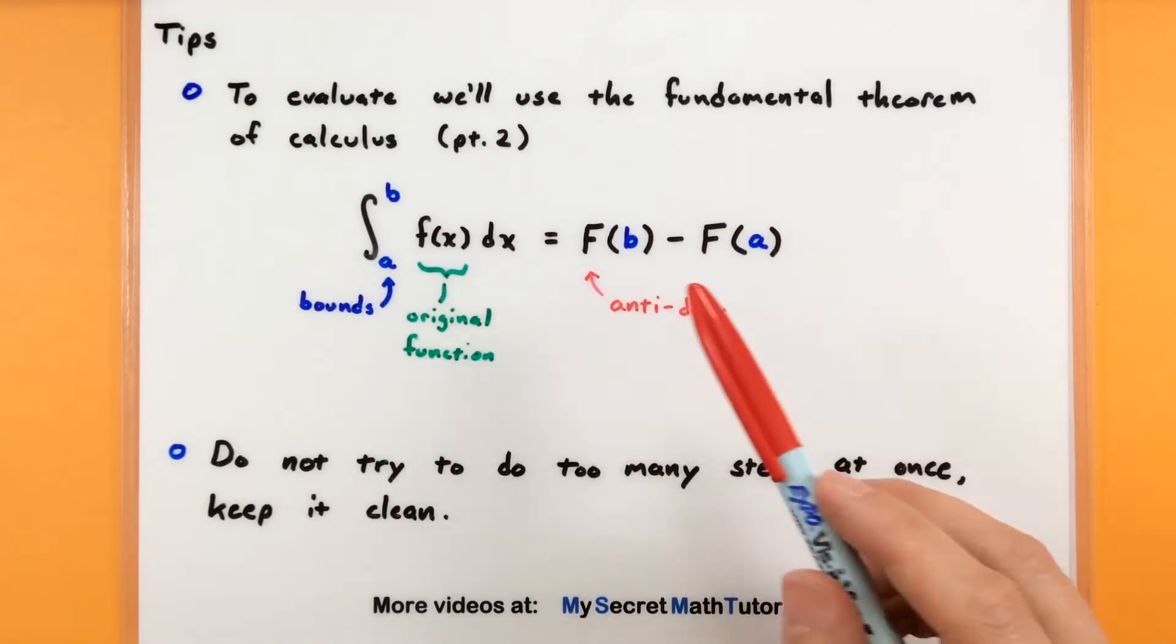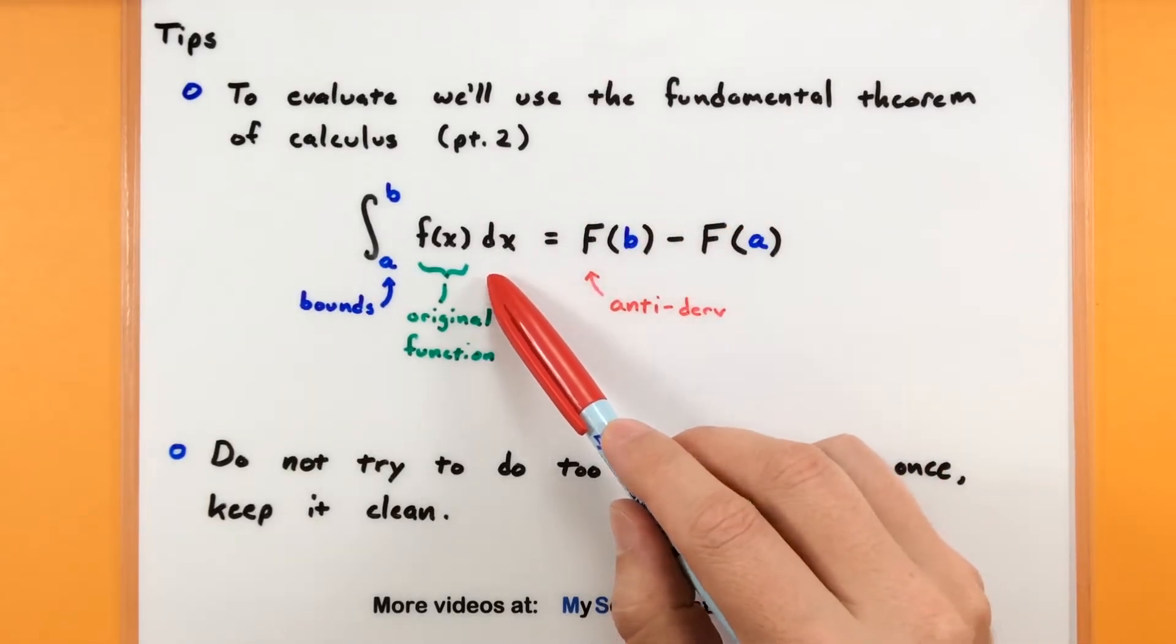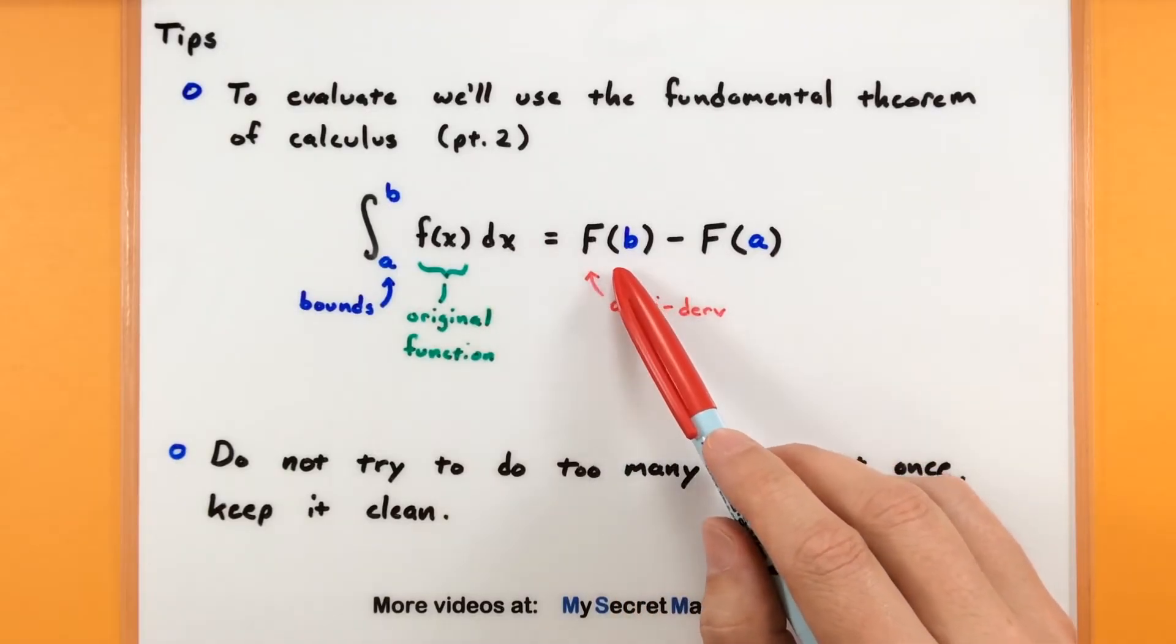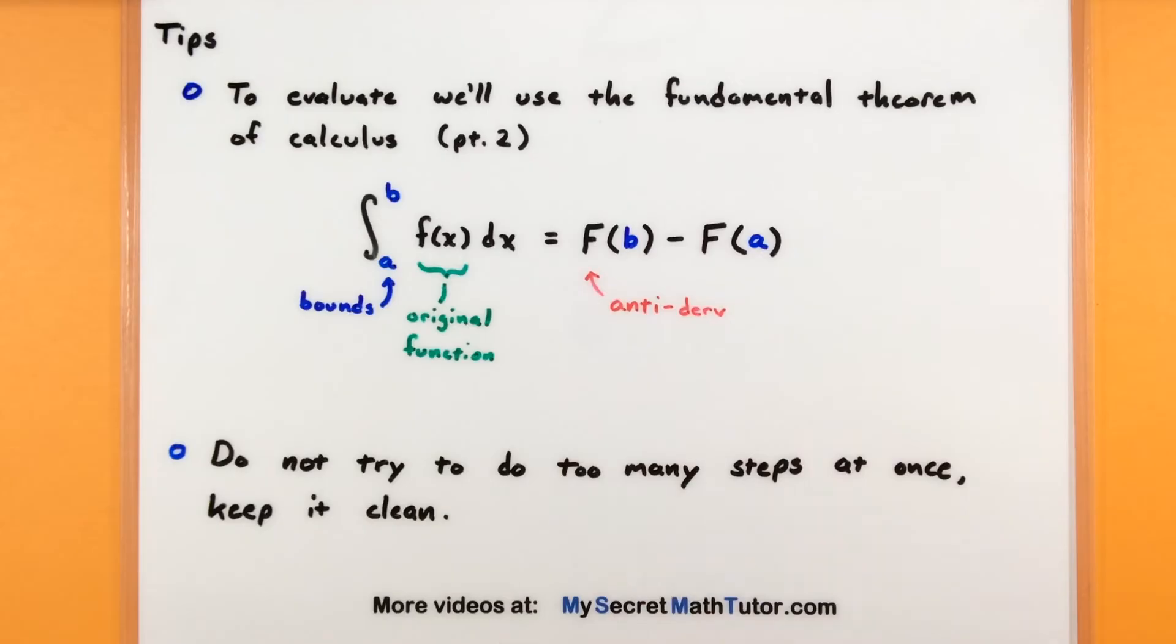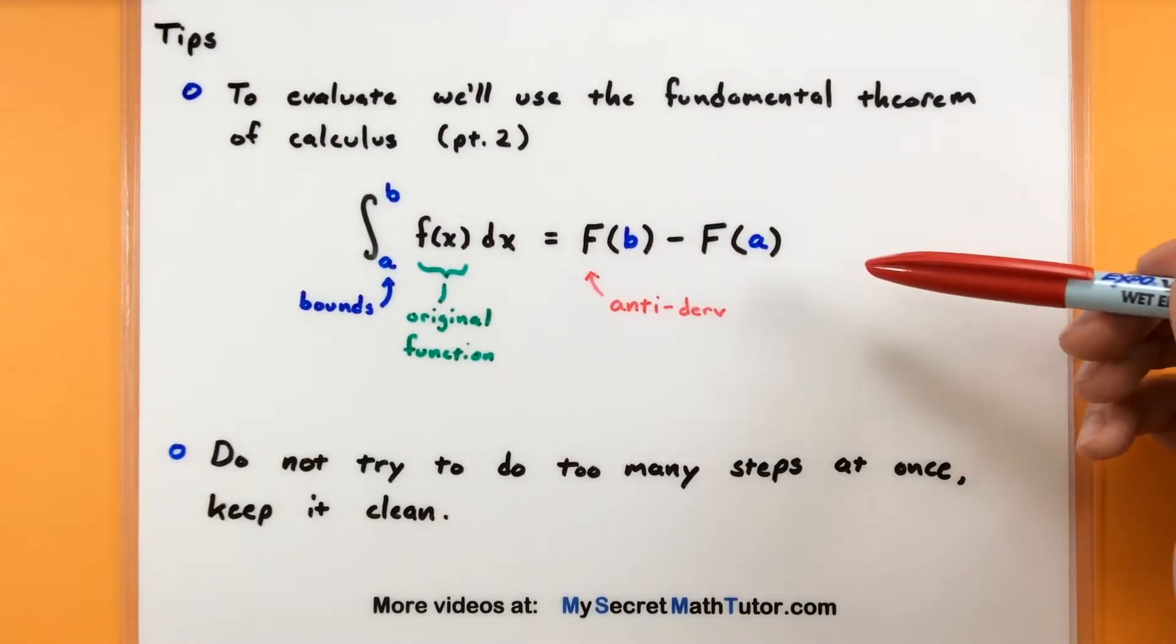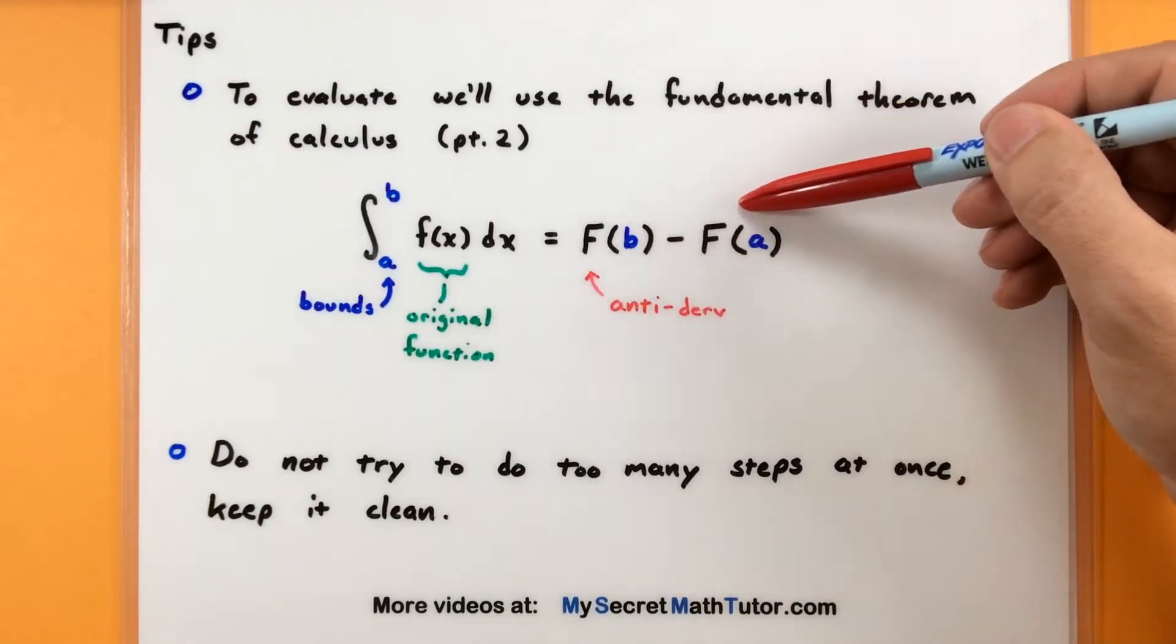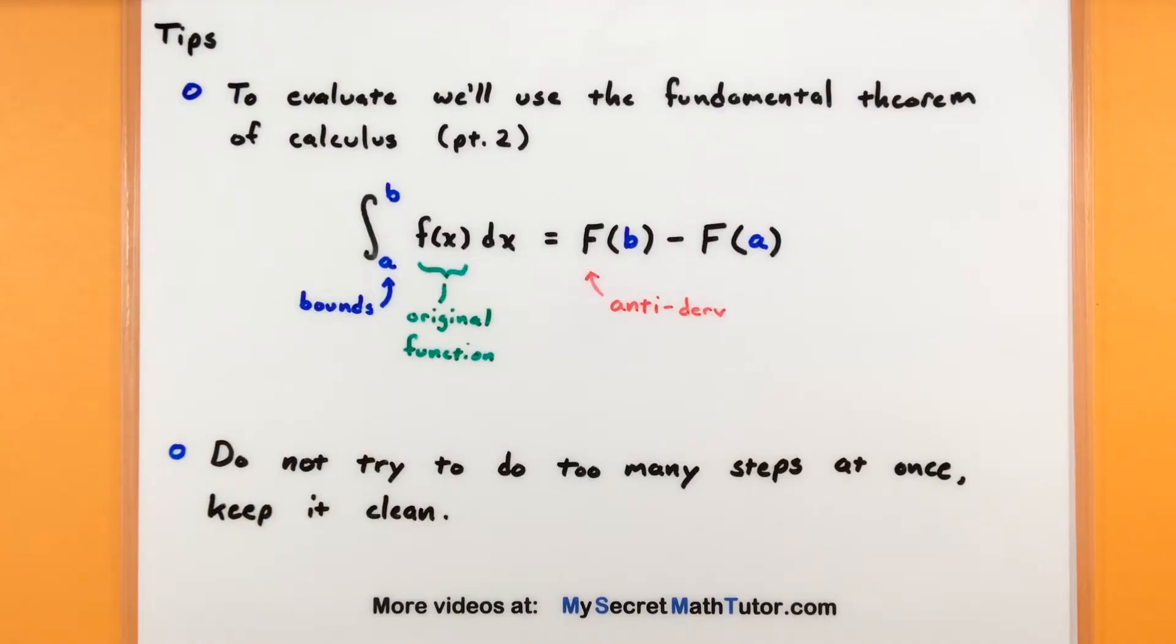The tough part about this is that you really just want to keep things nice and clean while you're going through these different steps. In other words, do not try and do too many steps at once, and definitely keep it clean. It's really just a lot of bookkeeping, and of course trying to find that antiderivative so that you can get to that next step. Let's go ahead and look at the example, see exactly what I'm talking about.